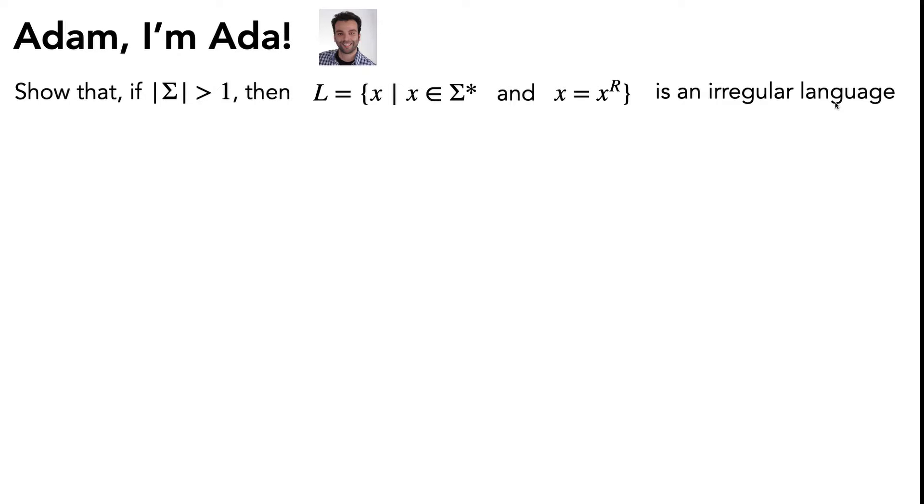So immediately, whenever you see us asking you to prove that a language is irregular, you should be thinking pigeonhole principle.